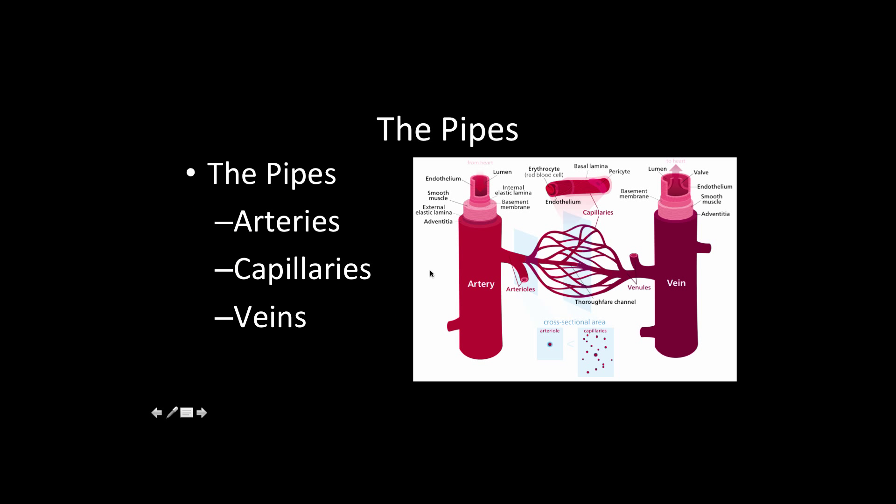The pipes are arteries, capillaries, and veins. Arteries move away from the heart, so when the heart beats, it creates pressure, it pushes blood out of the heart through the arteries, and you can feel that blood moving through the arteries in the form of a pulse.